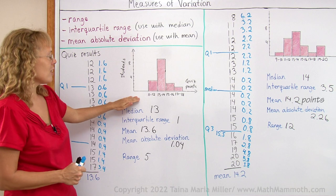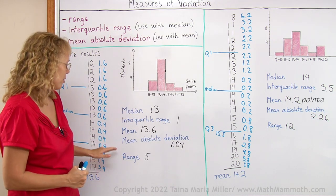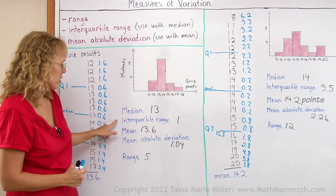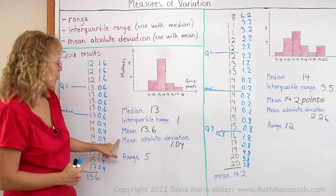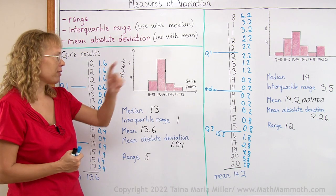However, in here the results varied way less than over there, which we can see from the interquartile range, from the range and from the mean absolute deviation. All of those measures are less here than over there.